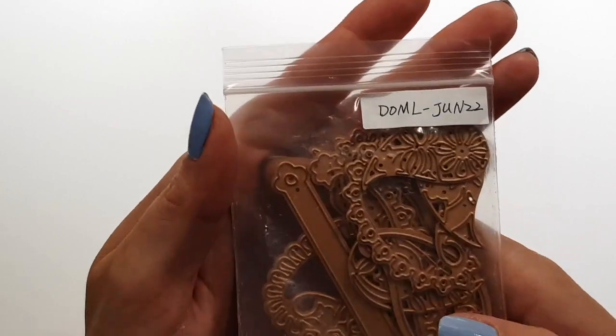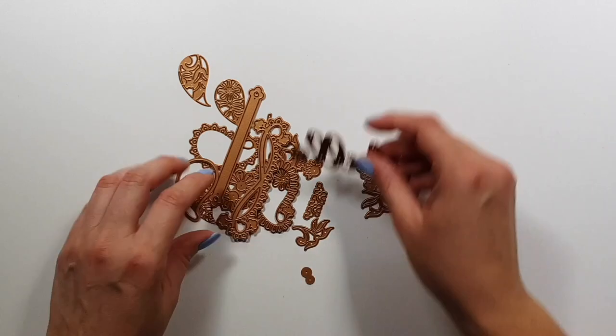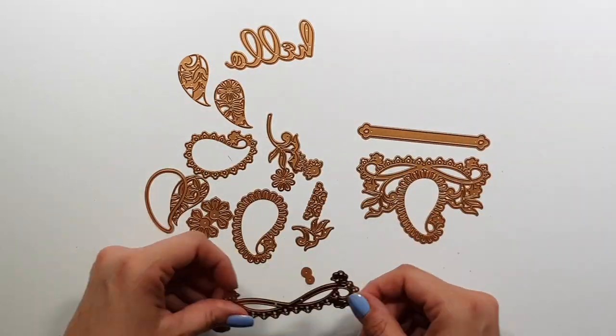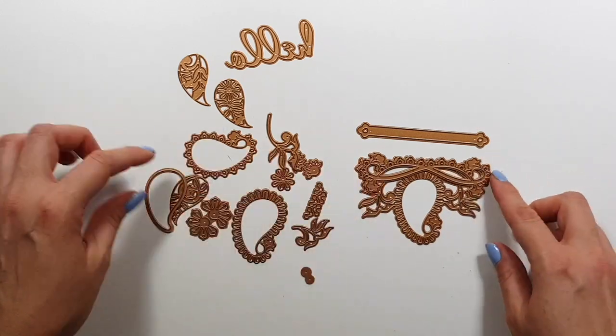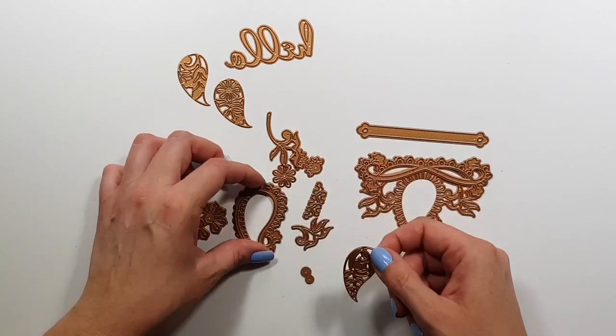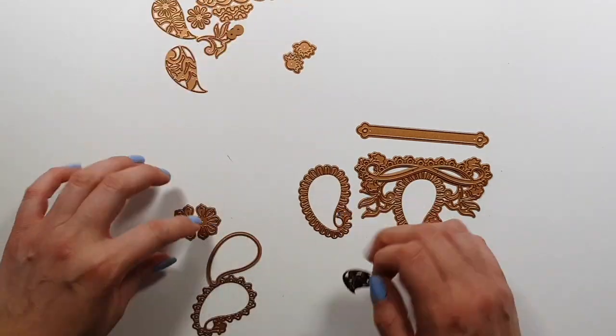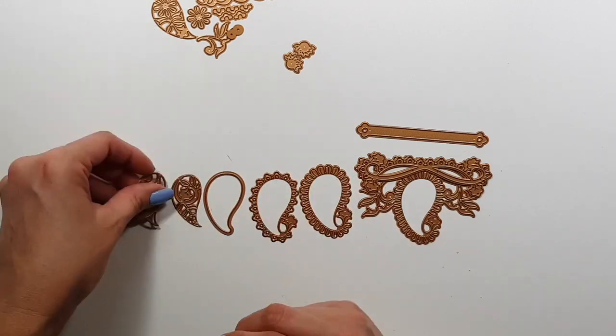So here is the die kit and as you can see it has quite a few pieces. I think it's called Paisley Dreams. I think that's the very first time I actually checked the name of the kit. So you can see that you can build different paisley patterns.